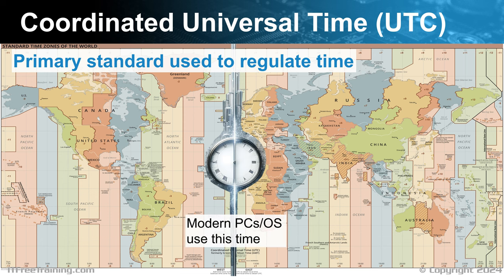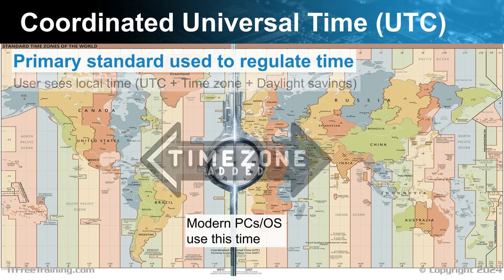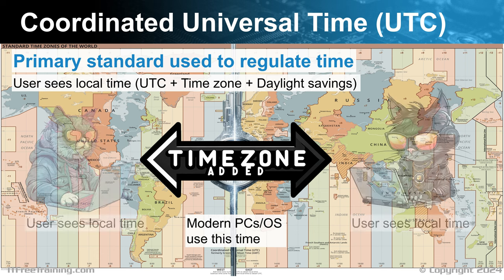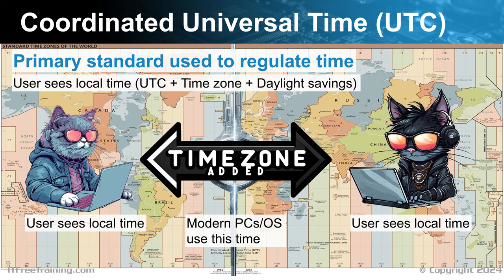Modern PCs and operating systems are designed to maintain time using UTC. To present the correct local time to users, the system applies the appropriate time zone offset and accounts for daylight saving time when applicable. While users interact with and view their local time, the operating system consistently operates using UTC in the background. This ensures accurate timekeeping regardless of any changes in the user's time zone, and the displayed time is seamlessly converted from UTC to local time.